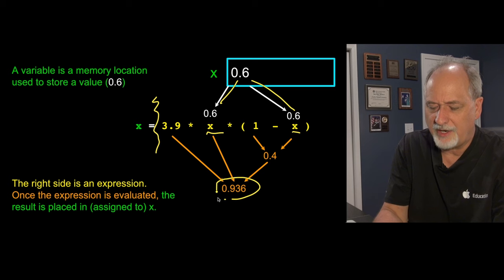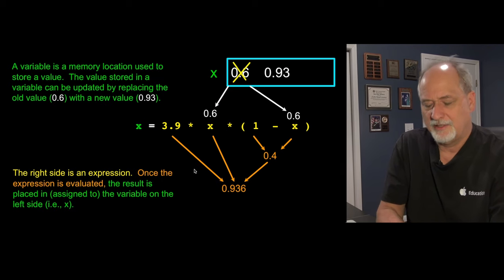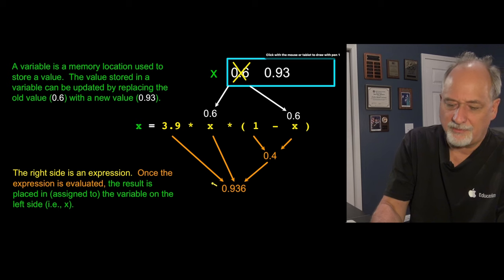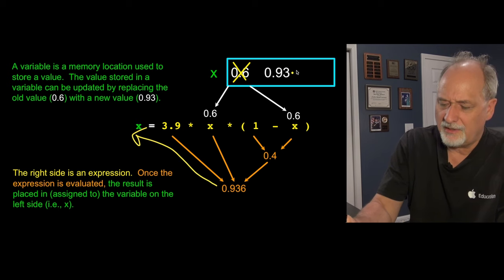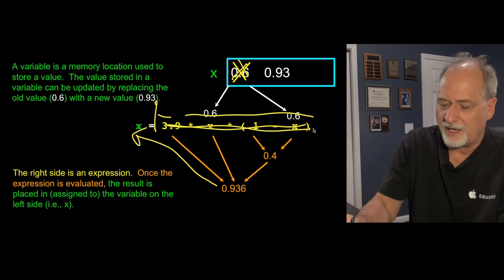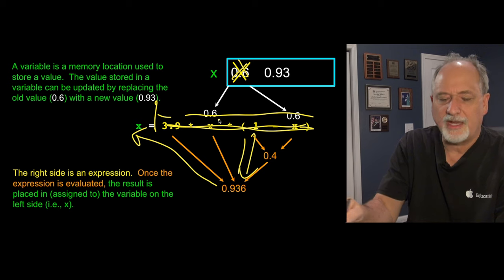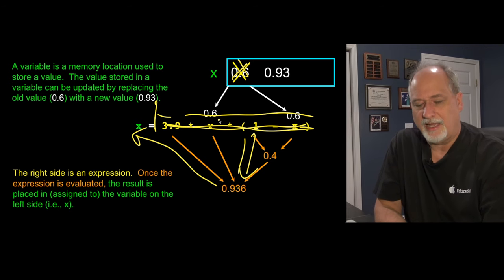After all the calculations are done, then and only then is it going to put that back into x. And so it sort of takes that and puts it back into x. And then wipes out the old value. At this point, this has all been taken care of and it's been reduced down to this 0.93. And so that is what's put in as the new value.